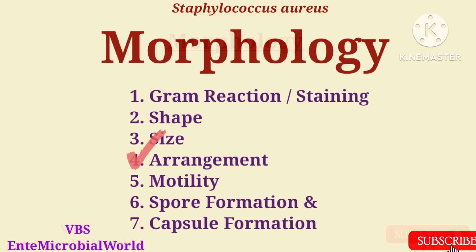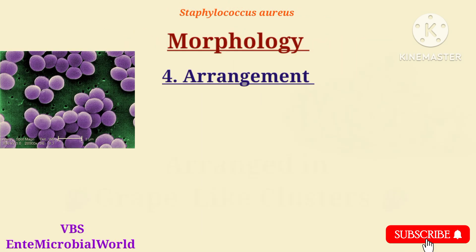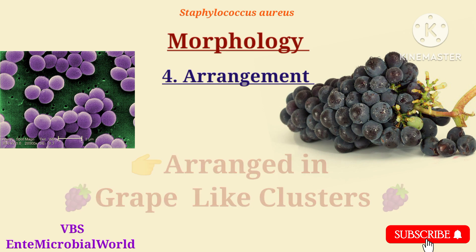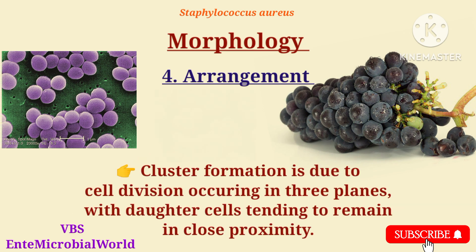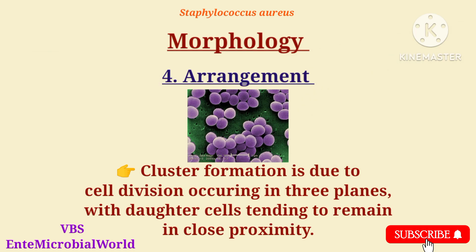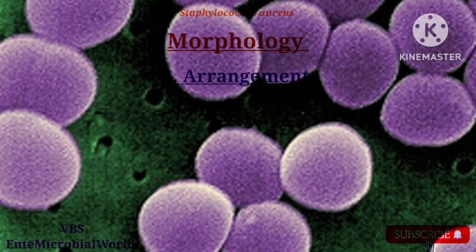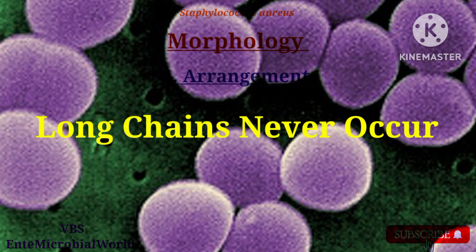Arrangement: Staphylococcus aureus is arranged in grape-like clusters. Cluster formation is due to cell division occurring in three planes, with daughter cells tending to remain in close proximity. They may also be found singly, in pairs, and in short chains of three or four cells. One important point to note is that long chains never occur.